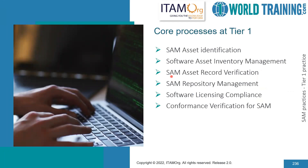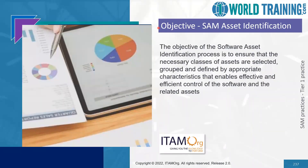These are the six core processes for Tier 1. Let's go through them one by one. The first one is SAM asset identification. This process ensures that all the required classes of assets are selected, grouped, and defined by appropriate characteristics that enable effective and efficient control of the software and the related assets.